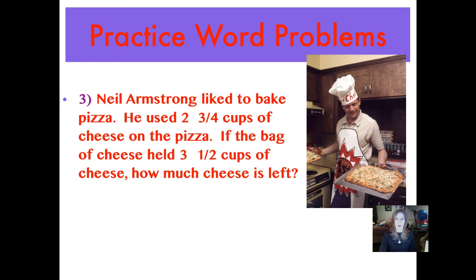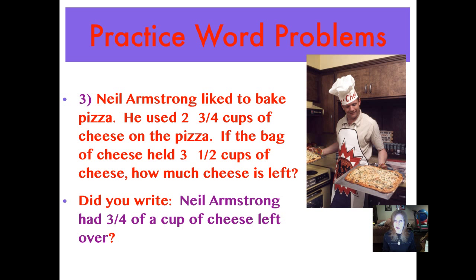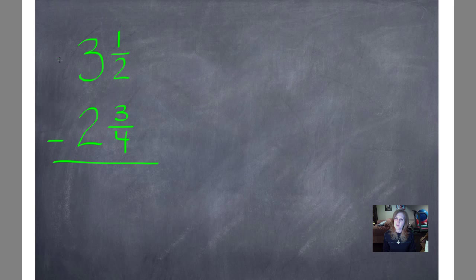There's Neil Armstrong cooking pizza. So our word problem is about Neil Armstrong and pizza. Neil Armstrong liked to bake pizza. He used 2 3/4 cups of cheese on the pizza. If the bag of cheese held 3 1/2 cups of cheese, how much cheese is left? Look for those key words. Think about what you're actually doing. Picture that bag of cheese and what's happening here and what you're looking for. Pause it and push play when you're ready. Did you write, in a complete sentence, Neil Armstrong had 3/4 of a cup of cheese left over? Let's work that together. So if you're looking for key words, how much he had left is always a key to subtract. But here's the bag of cheese, 3 1/2 cups, and he used 2 3/4 cups. So whatever's left over, I'm going to find from subtracting.